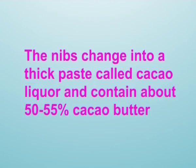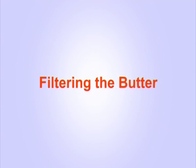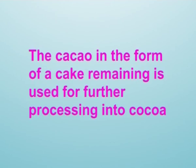Grinding: the nibs are ground under heavy steel rollers with some heat; the grinding process also produces its own heat. The nibs change into a thick paste called cocoa liquor, containing about 50 to 55 percent cocoa butter. Filtering the butter: the liquor is filtered using hydraulic pressure to remove the colorless cocoa butter. The cocoa in the form of cake remaining is used for further processing into cocoa powder, hot chocolate, and cheap commercial chocolates.